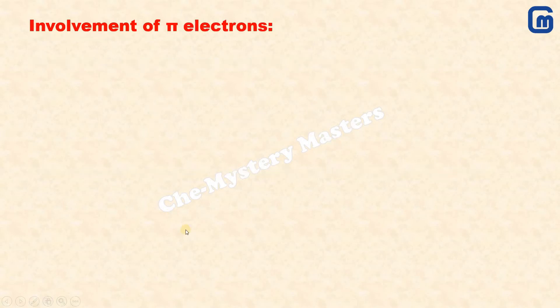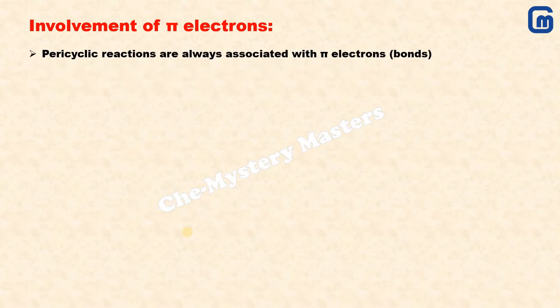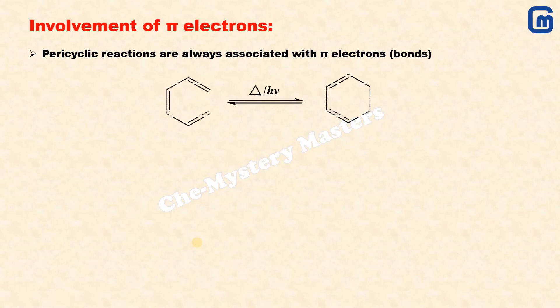The second feature of any pericyclic reaction is the involvement of pi electrons, or pi bonds. It is very important for pericyclic reactions to have pi electrons, and their movement or shifting is also critical — it is due to this shifting of pi bonds that cyclic reactions happen. Importantly, the pi bonds must be in conjugation with each other; only those pi electrons in conjugation will undergo pericyclic reactions.